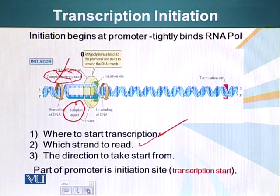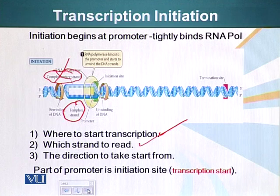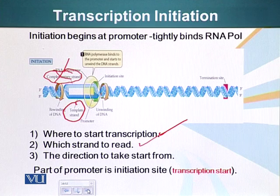The promoter also gives RNA polymerase the direction in which to start transcribing or making RNA. Part of the promoter is the initiation site where transcription will start — meaning the part of DNA that will get converted into messenger RNA is also part of the promoter.